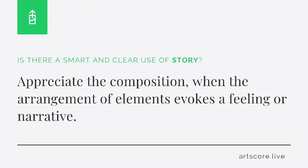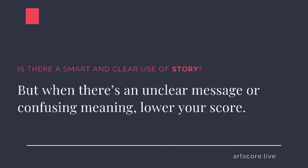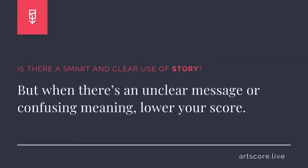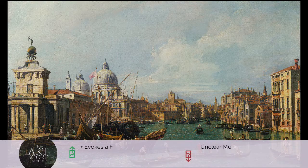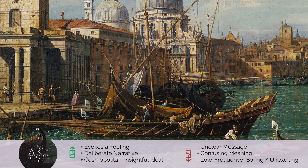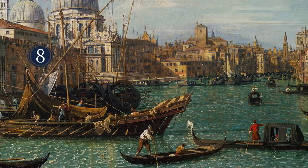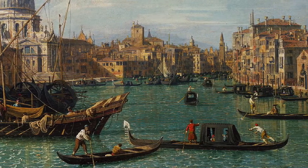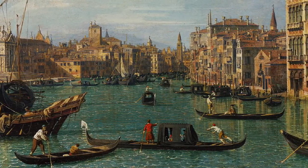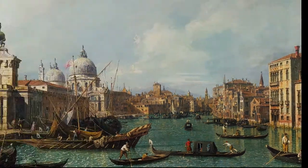Story. Is there a smart and clear use of story? Appreciate the composition when the arrangement of elements evokes a feeling or narrative. But when there's an unclear message or confusing meaning, lower your score. I scored the arrangement an 8. I see how the elements evoke a deliberate story. What's your score?